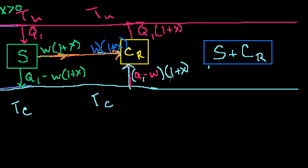So this is, in this direction, we could rewrite this. I want to make sure you're clear on the algebra. This could be rewritten as what? As Q1 times 1 plus x minus w times 1 plus x. Right?